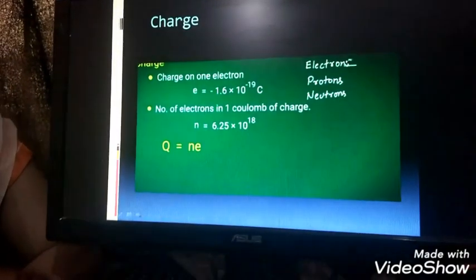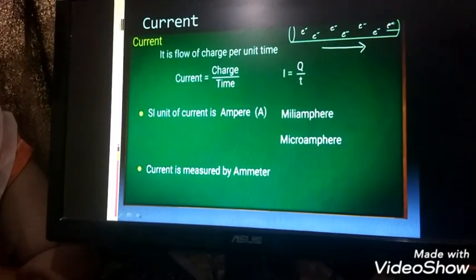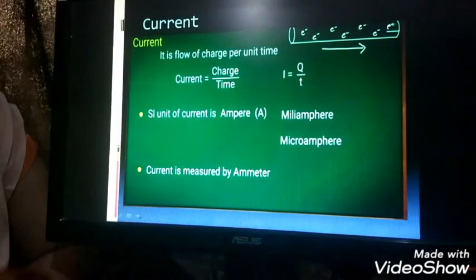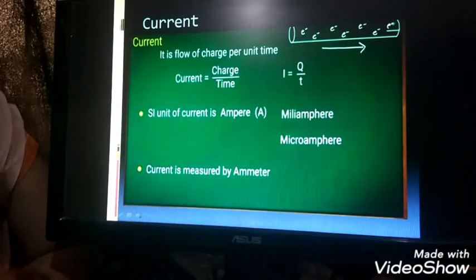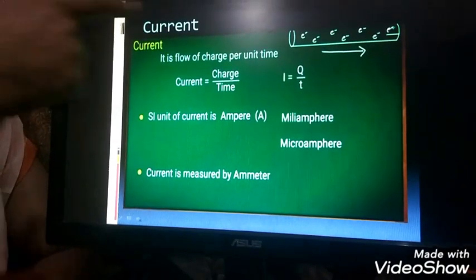When the charge flows we call it current. You know that a conductor contains electrons which move in different directions. Due to some force it starts to move in one direction.